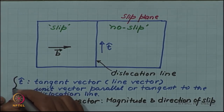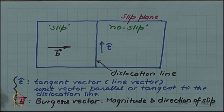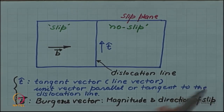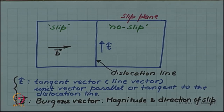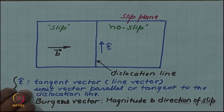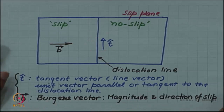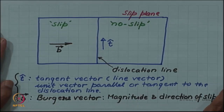For every dislocation, these two vectors are required as characteristic vectors. We will have more to say about the Burgers vector — there is another way of looking at it not in terms of magnitude and direction of slip, but in terms of a circuit called the Burgers circuit, which will be a topic of another session. With these two vectors, a dislocation is fully characterized.